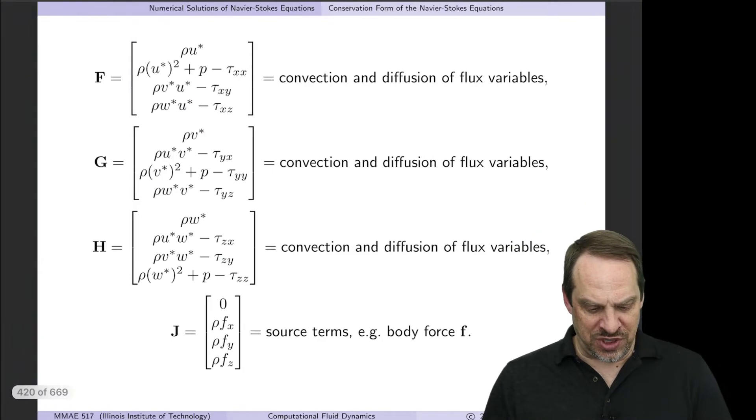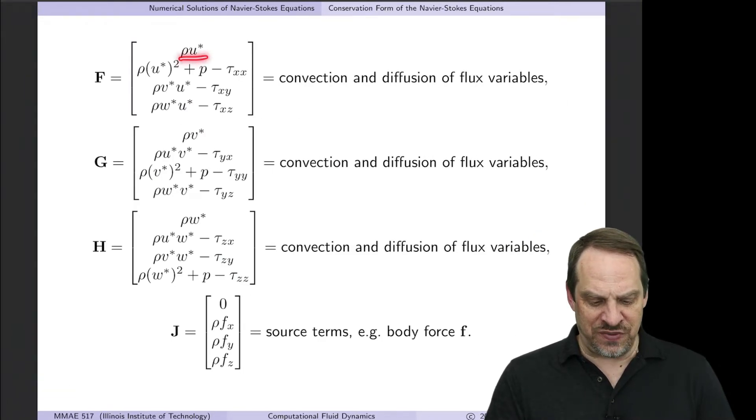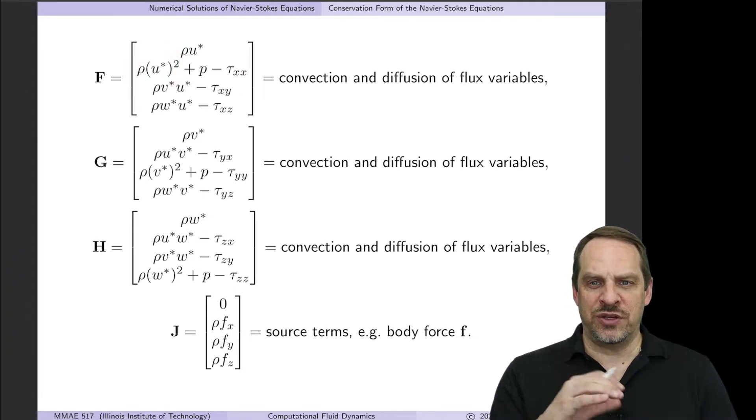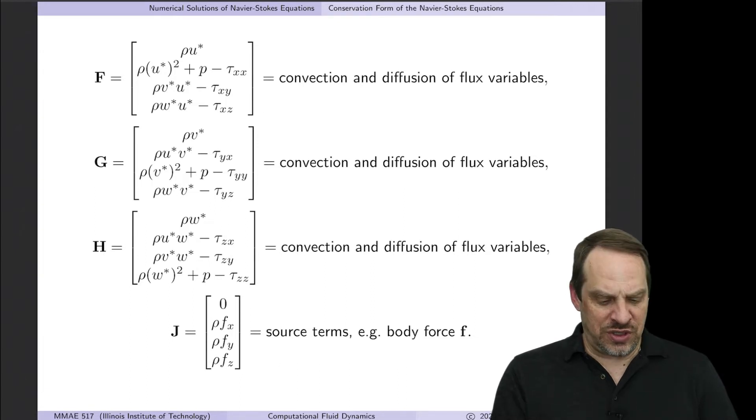Now for the x derivatives, you'll see some similarities. Again, the first element in the vector is from the continuity equation. That's the same for G and H, and then we have x momentum, y momentum, and z momentum. You'll recognize the pressure term here. We have the viscous terms I'm just representing as shear stresses using the double subscript notation, and then this term, the ρ times U* squared, that comes from the convection terms.